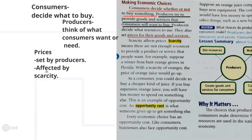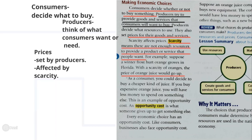Scarcity affects prices. Scarcity means there are not enough resources to provide a product or service that people want. For example, if a winter frost hurts orange groves in Florida, there is a scarcity of oranges and the price of orange juice goes up. Similarly, if the supply of leather is low, you cannot produce many shoes, and the price will go up.